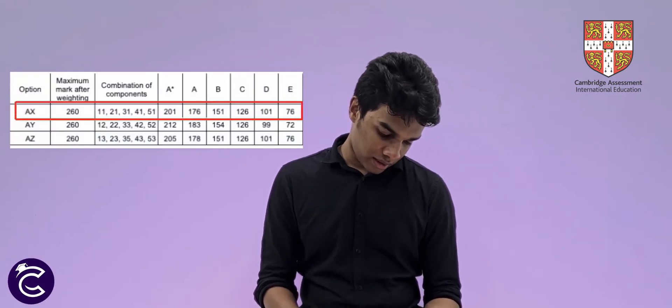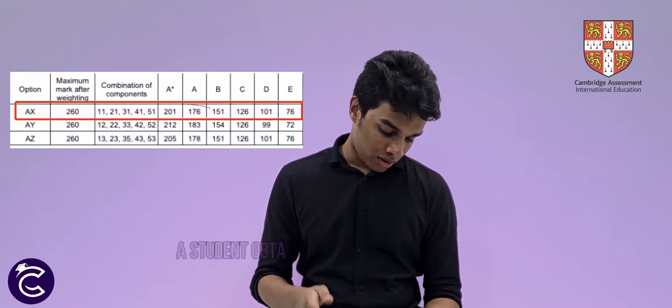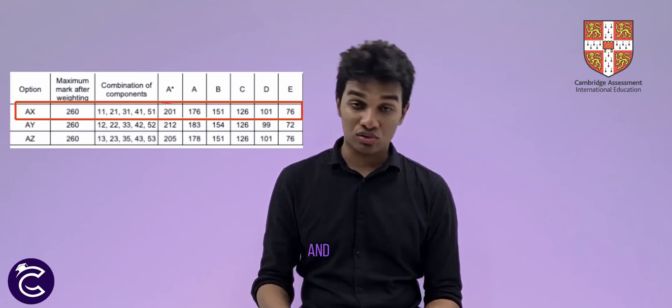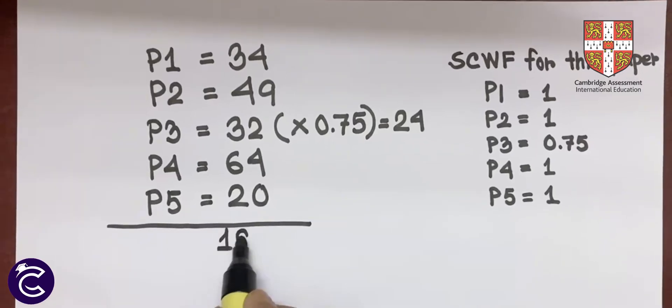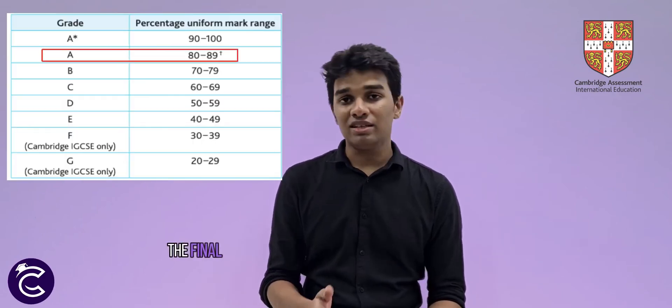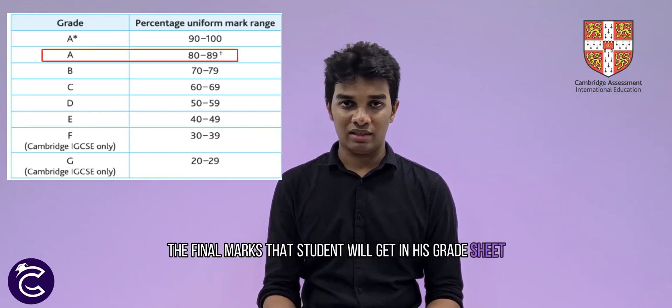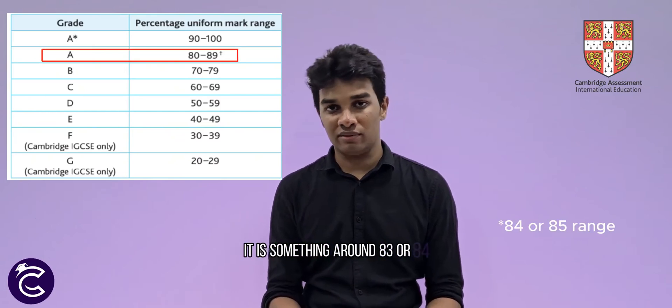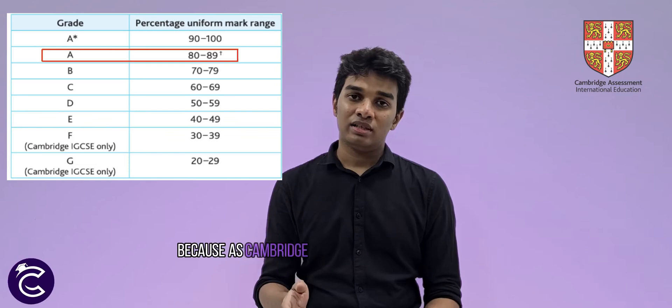As you can see, in this particular year the grade boundary shows that a student obtaining 176 will receive an A, and a student obtaining a minimum of 101 will receive the next grade, and so on. In our example, the student has obtained a total of 183. This particular student has obtained marks within the range of A and A*, so the marks are beyond A but below A*. After being converted to PUM, the final marks the student will see on their result sheet will be something around 83 or 84, as Cambridge converts the grading into a scale of 100. This is how your marks are delivered — internally converted into your final PUM.